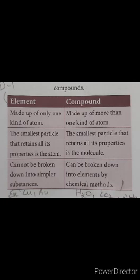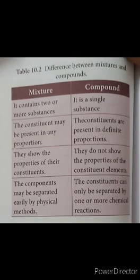So matter is classified into two: pure substance and impure substance. Among pure substances, it is further classified into elements and compounds. Here comes the next classification of matter — impure substances, that is, mixtures. A mixture is an impure substance which contains two or more kinds of elements or compounds physically mixed together in any ratio.